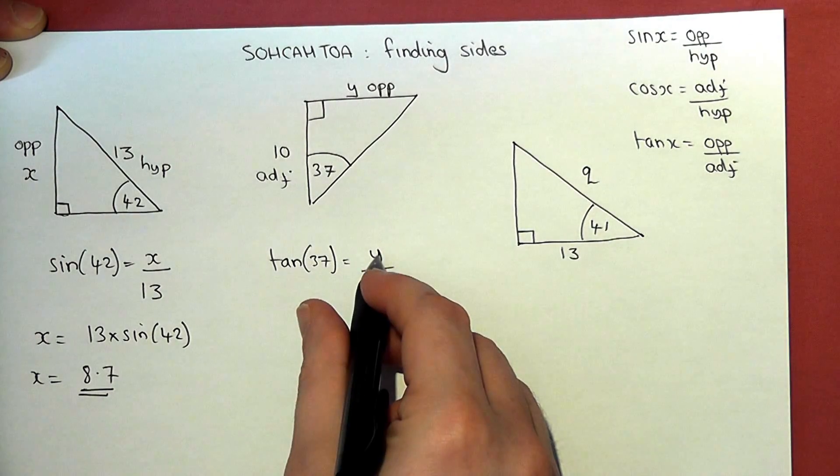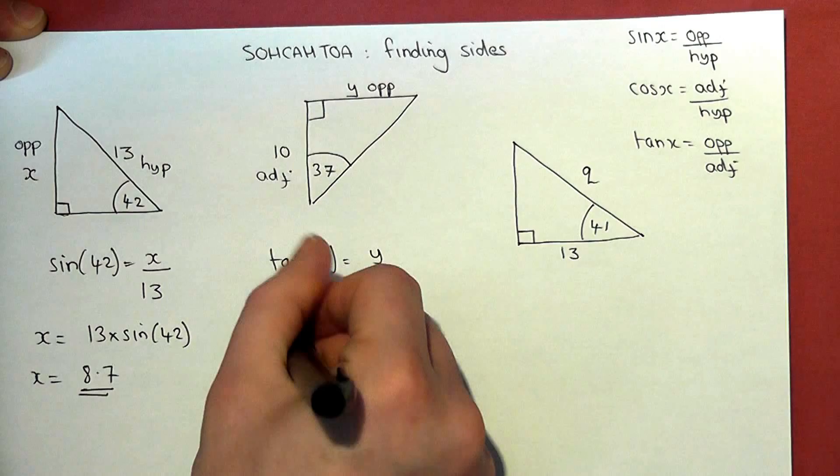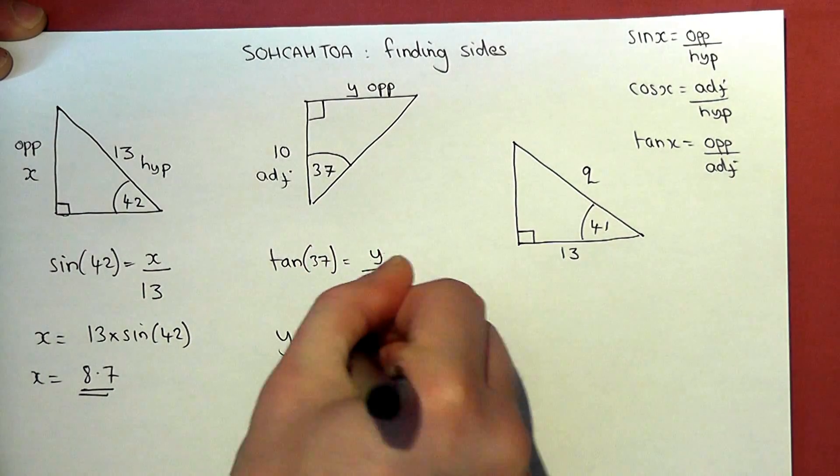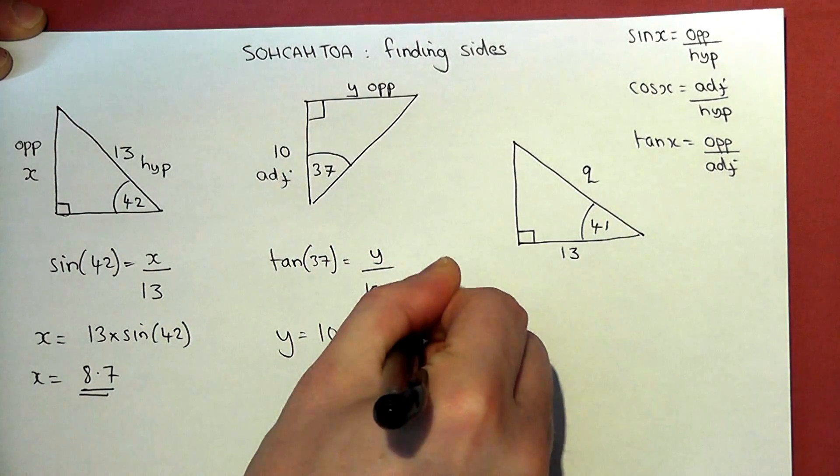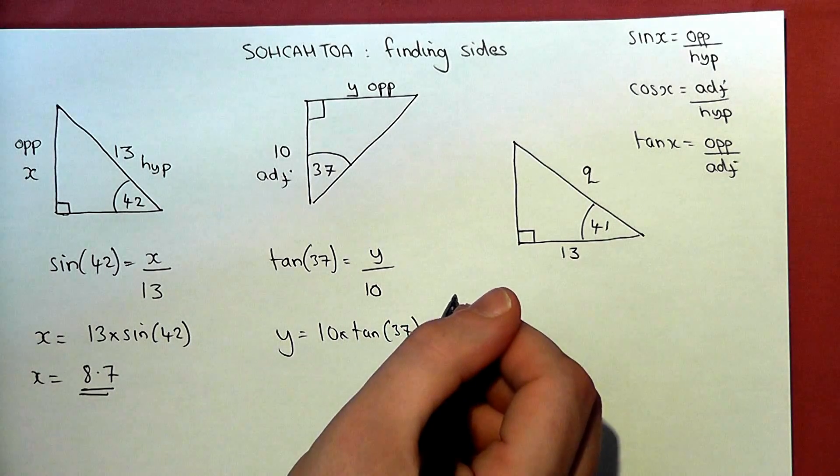So again, to find y, I must rearrange the equation by multiplying by 10. So y is 10 lots of tan 37. So I input that into my calculator.